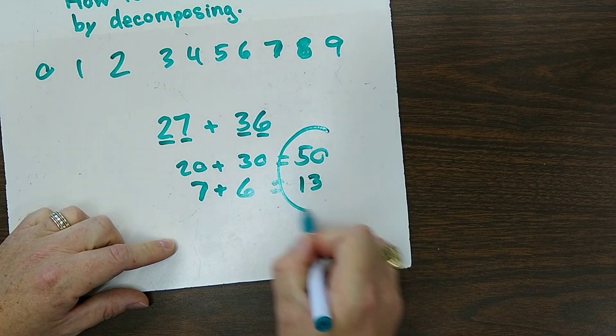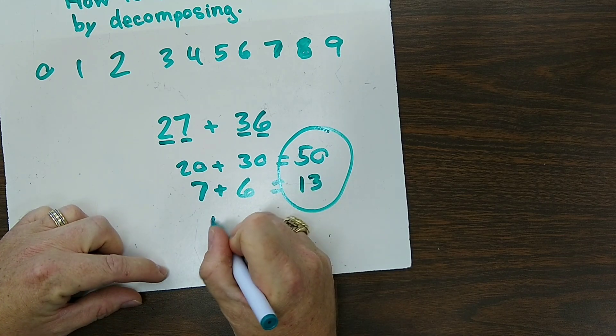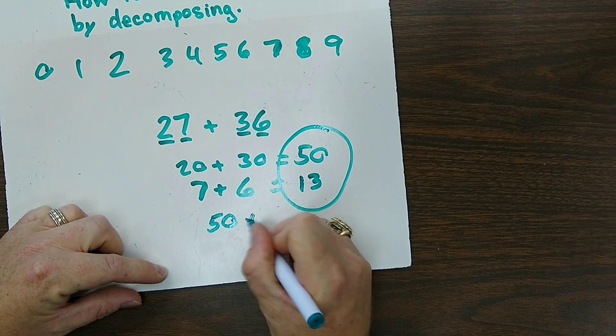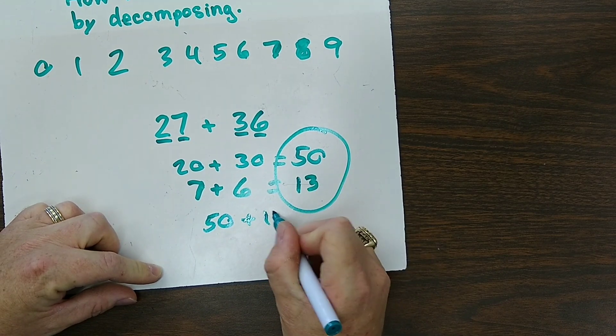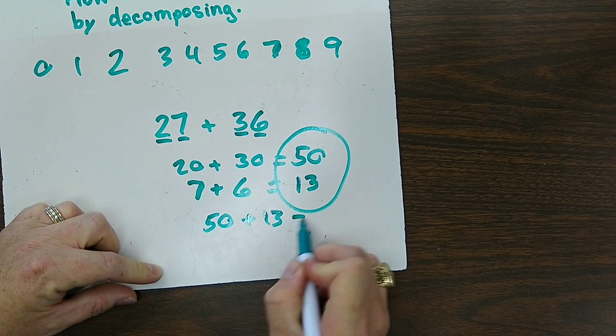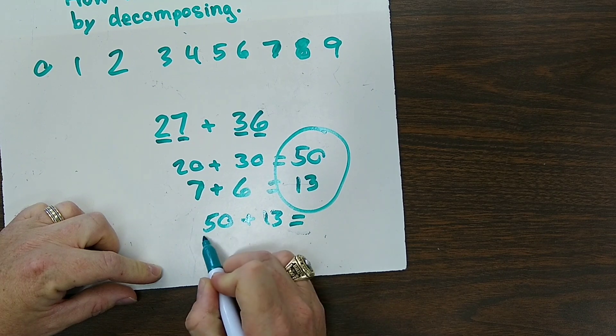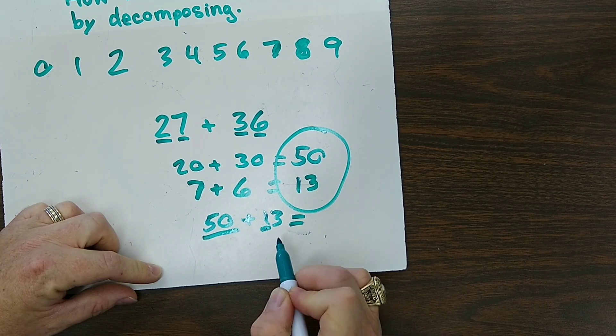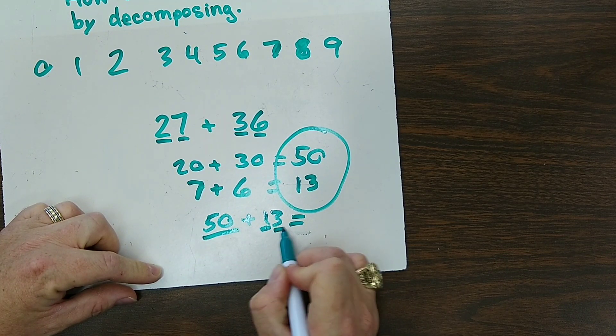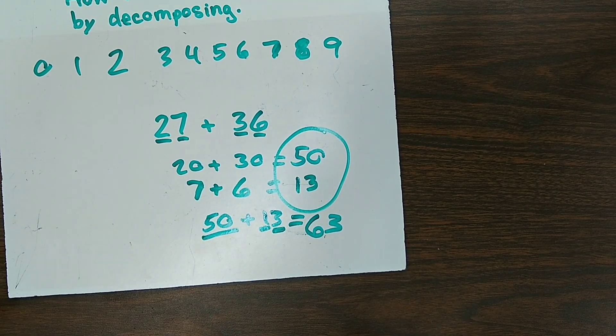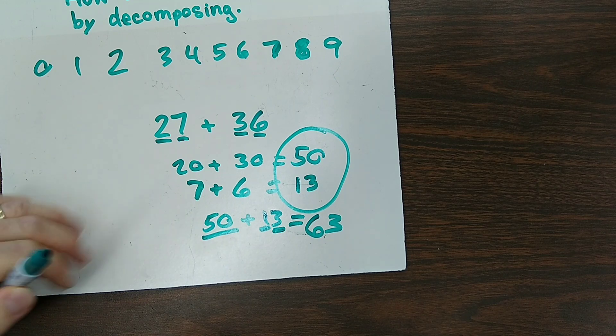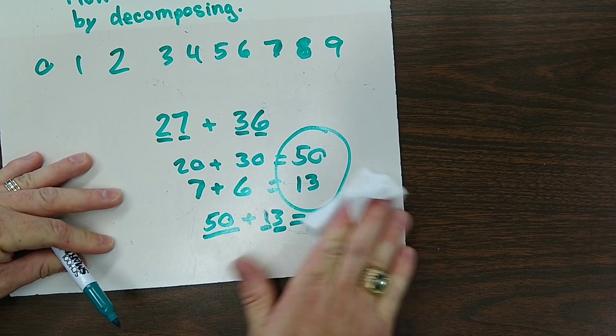So at this point, we're going to go ahead and put 50 and 13 back together. And this is where you might want to write it out so you can actually see this until you get the hang of it. And we're just going to walk down the row here. So 50 plus a 10 gives you 60, plus 3 more gives you 63. So that's how you add both without regrouping and with regrouping by decomposing.